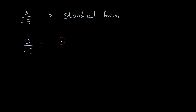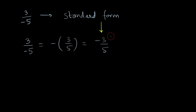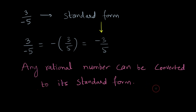For the fraction 3 by minus 5, the denominator is minus 5. We can write 3 by minus 5 as minus of 3 by 5, shifting the negative sign to the numerator. The denominator is now positive and there are no other common factors between 3 and 5, so the standard form is minus 3 by 5. Any rational number can be converted to its standard form.